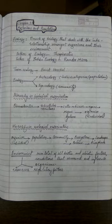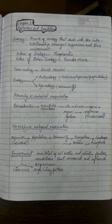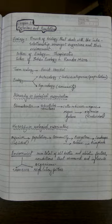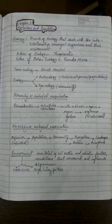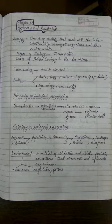We learned that the father of ecology worldwide is Theophrastus, who is also the father of botany, and in India the father of ecology is Ram Deo Misra. We also learned that when ecology involves the interaction of individuals of the same species it is called autecology, and when it deals with the study of interactions of different populations — that is, different species — it is called synecology. 'Syn' means doing something together.